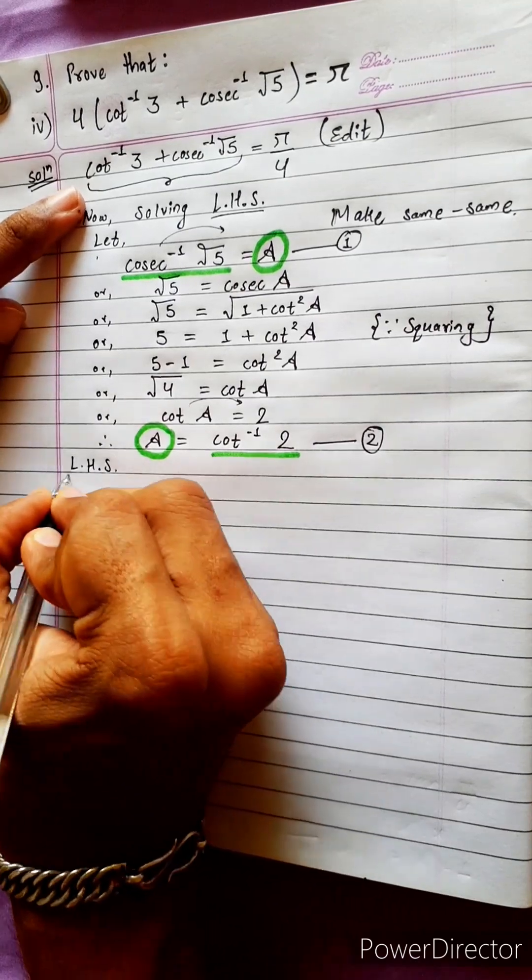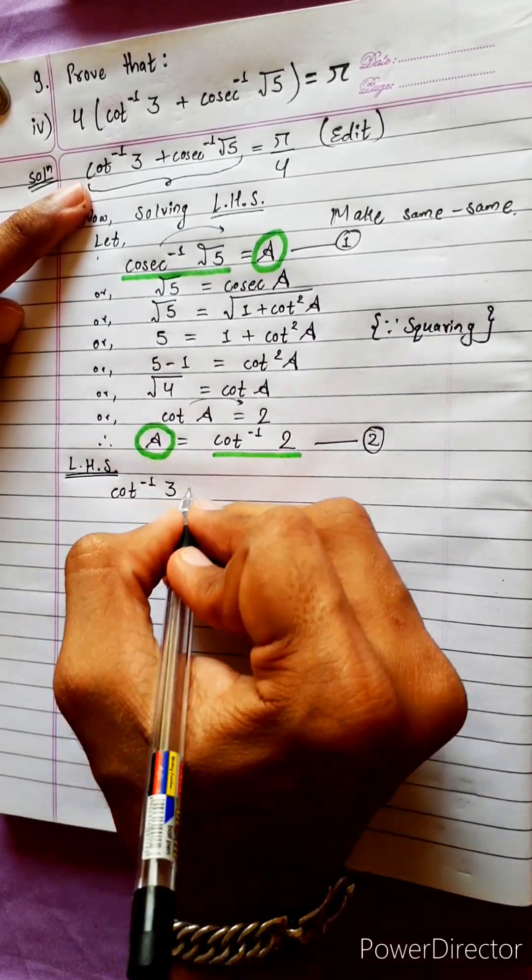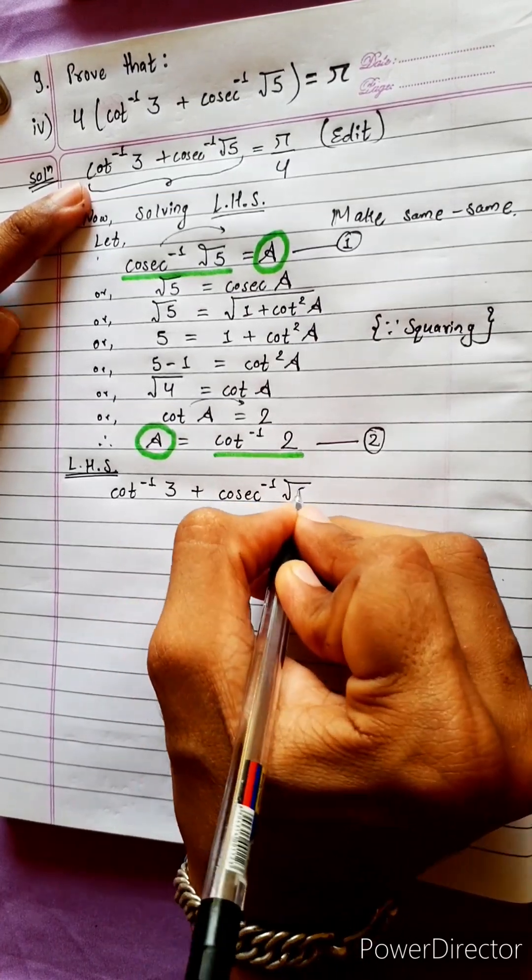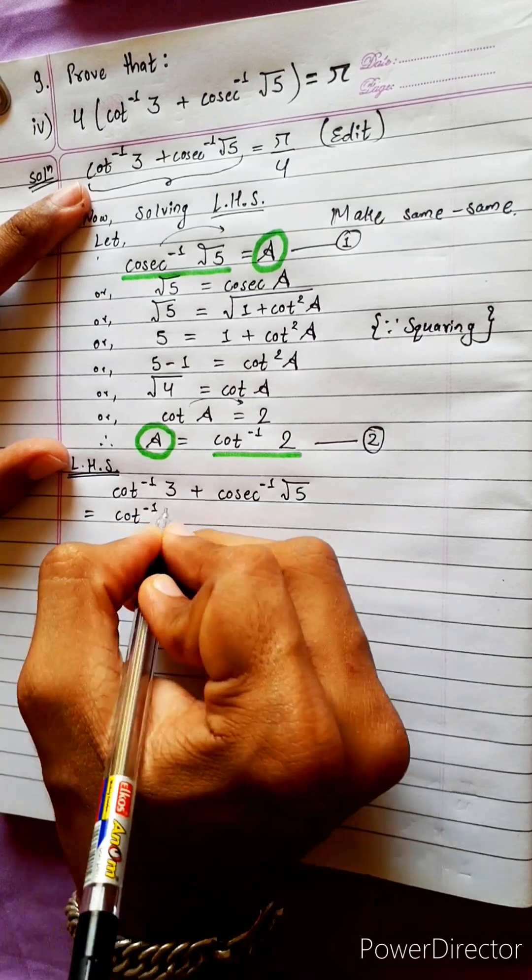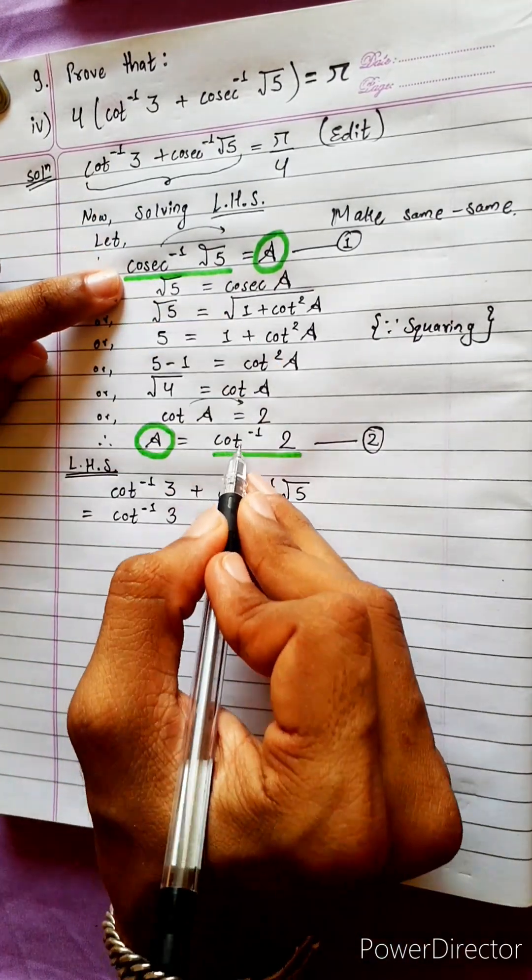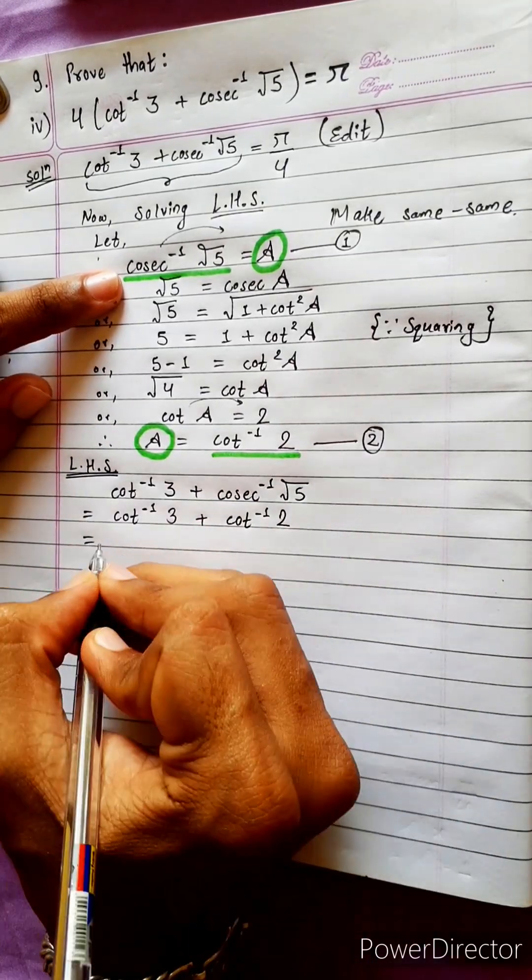Now, we write here LHS. Cot inverse 3 plus cosec inverse root 5. This will be equal to cot inverse 3 plus, in place of cosec inverse root 5, we will write cot inverse 2. Now, there is formula.